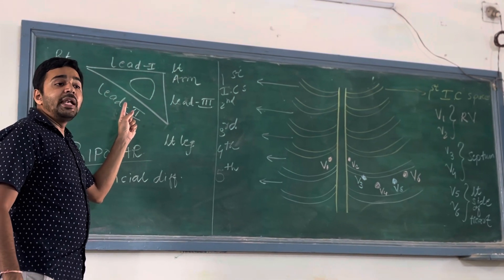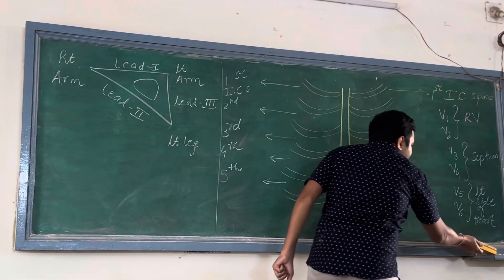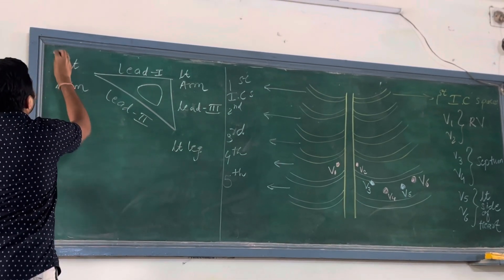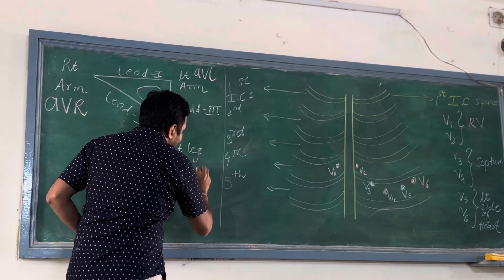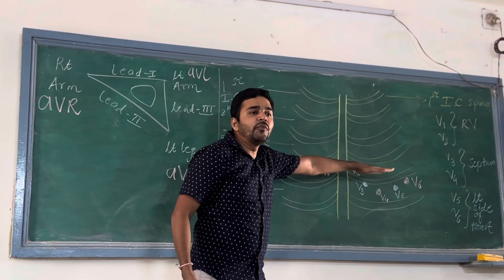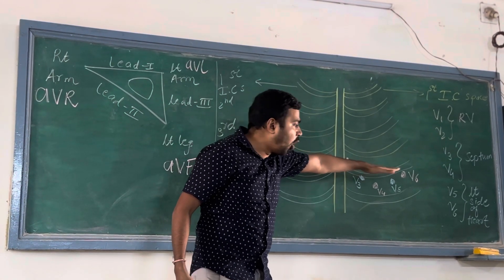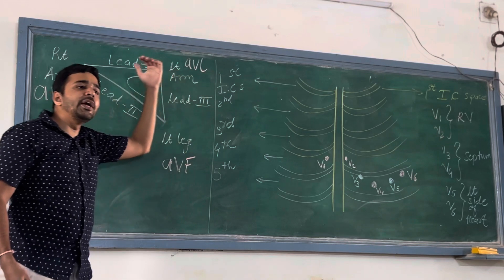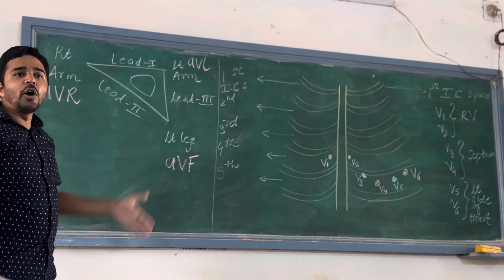These are all unipolar chest leads. Remember the limb leads — Lead 1, Lead 2, and Lead 3, as well as AVR, AVL, and AVF. These chest leads will record the electrical currents or direction of electrical currents from the horizontal plane. And all these limb leads will record the vertical plane of the heart.